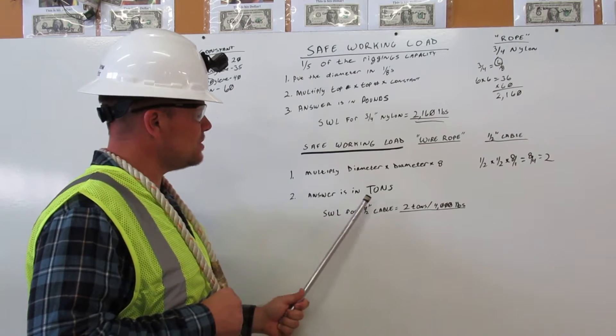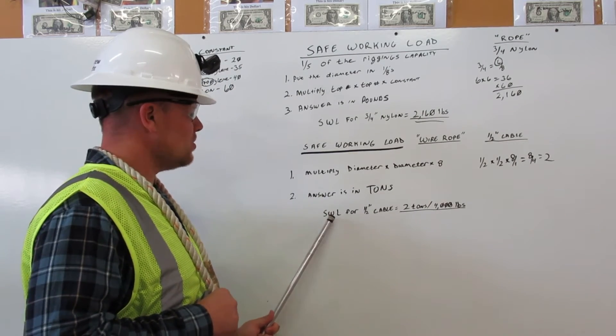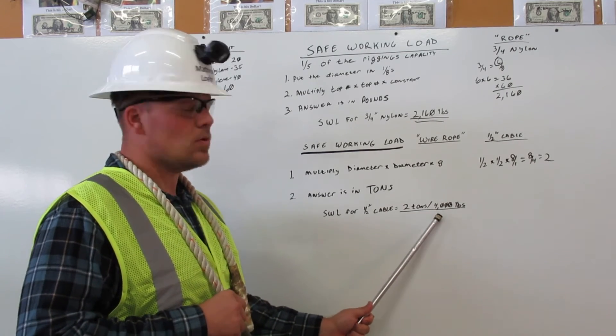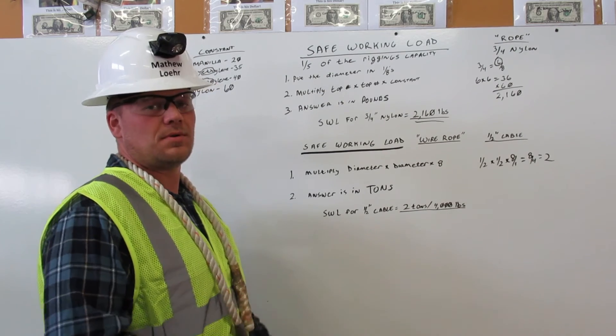Number two, your answer is in tons. So the safe working load for a half-inch cable equals two tons or 4,000 pounds. Thank you.